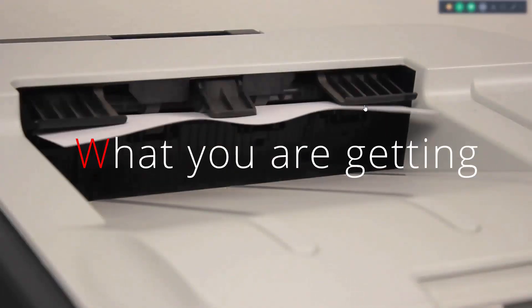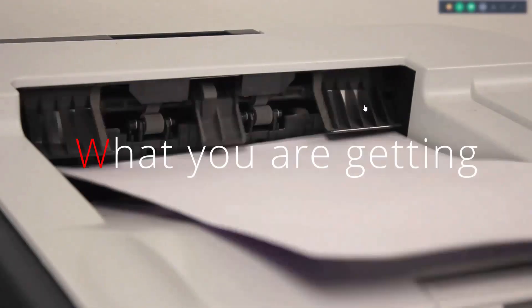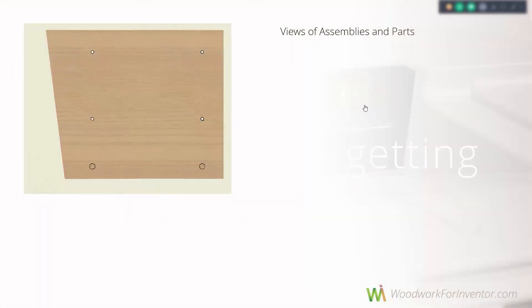Now let's find out what you get using the AutoPlot tool. First of all, you automatically get all the views of your assemblies and parts that you have in your model. Trust me, this is a very big improvement. If you just get those views placed automatically, it will save you a bunch of time — it's a huge amount of work to place all those views on the drawing without missing any of them.